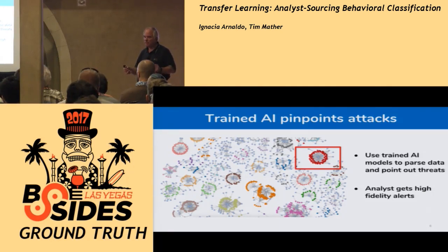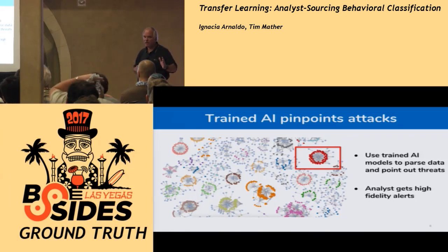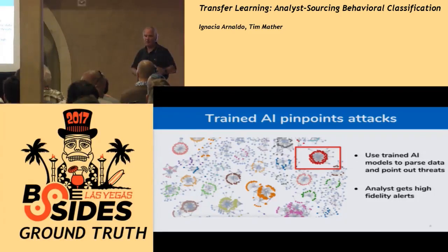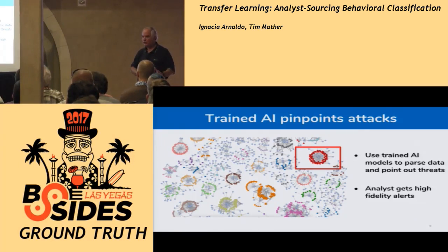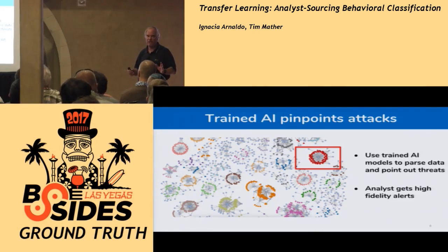So what Nacho is going to get into is how to train a model without having to write SIEM correlations. Correlations are great, but trying to write them for all the thousands — probably hundreds of thousands — of variables you'd have to account for isn't going to work. You're never going to write enough correlation rules to do that.